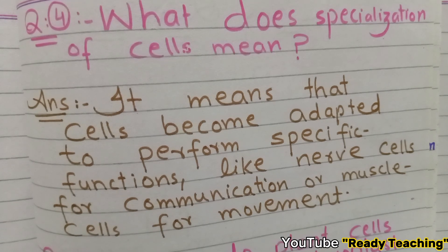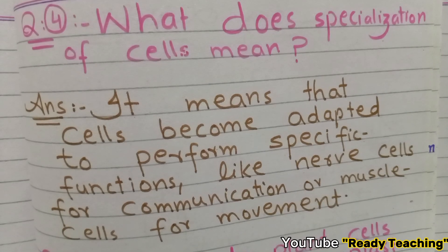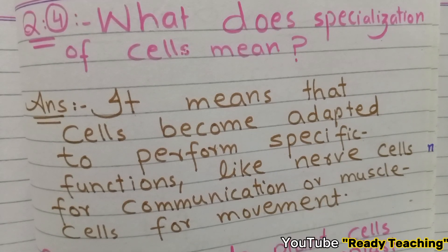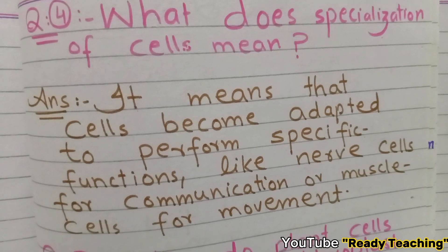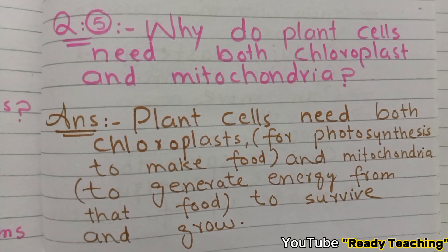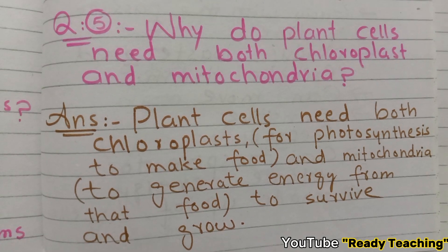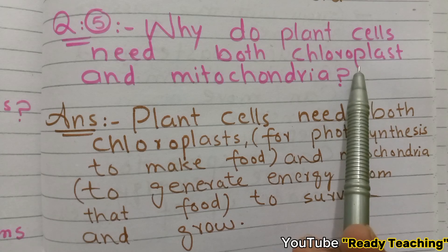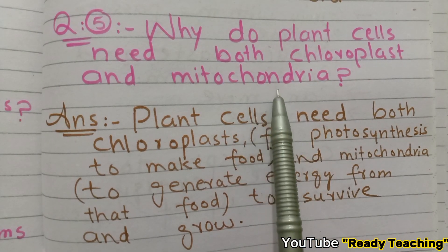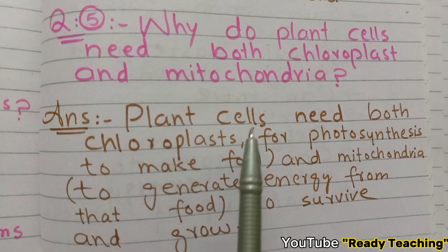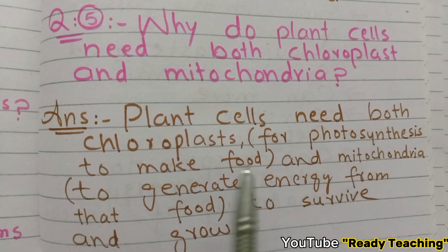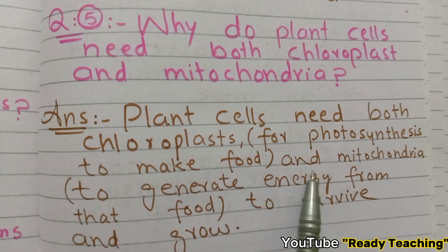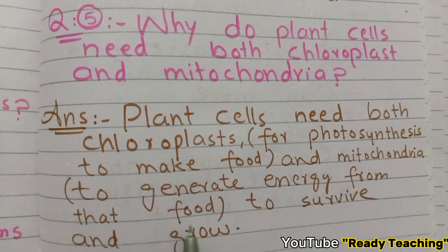Examples of specialized cells include muscle cells for movement and nerve cells for communication. Specialization means that different cells perform different specific functions. Next question: Why do plant cells need both chloroplasts and mitochondria? Chloroplasts are needed for photosynthesis to make food; mitochondria are needed to release energy from that food for the cell to survive and grow.